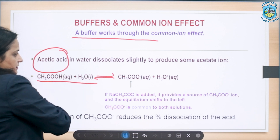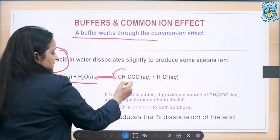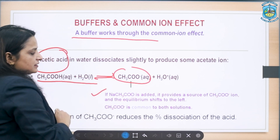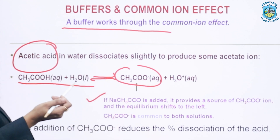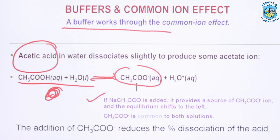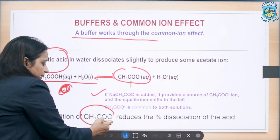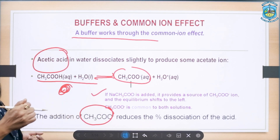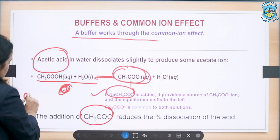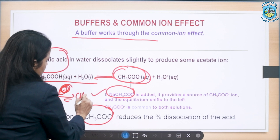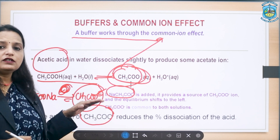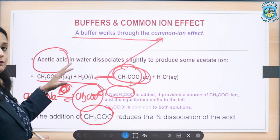Acetic acid weakly ionizes in water to give acetate ion and H₃O⁺. If sodium acetate is added, it provides a source of acetate ion and the equilibrium shifts towards the left. Therefore, addition of acetate ion reduces the dissociation of acetic acid, because both acetic acid and sodium acetate produce acetate ion. Acetate ion acts as the common ion, causing a reduction in the dissociation of acetic acid. This is how the buffer solution works.